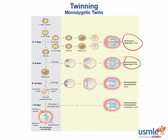More commonly, about 75% of the time, the embryo splits between days four and eight, when the chorion has already formed but the amniotic sac has not. These twins will share a chorion and placenta, but each have their own amniotic sac. Monochorionic, diamniotic.